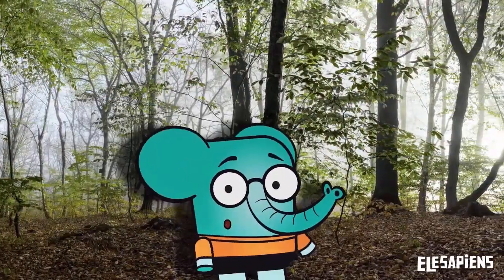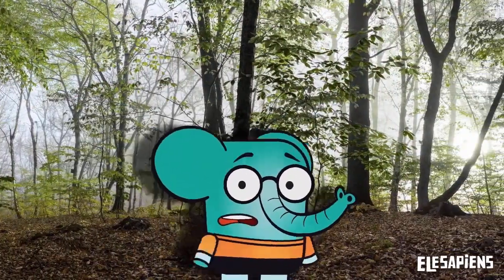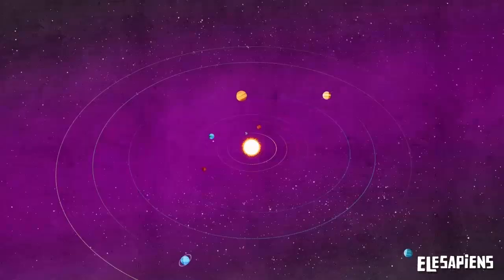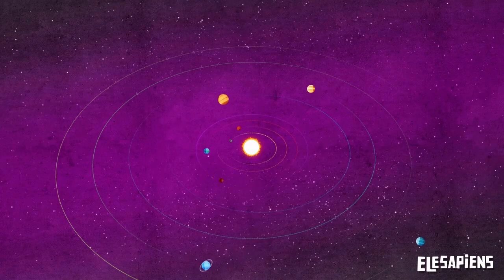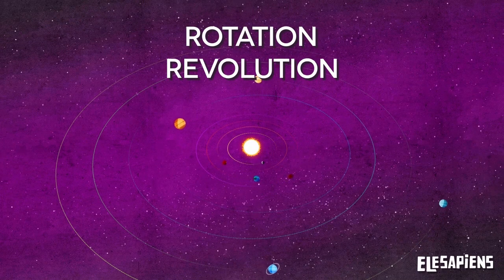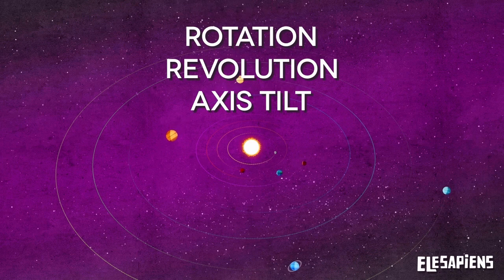But how do these cycles happen? Everything can be explained with three key concepts: rotation, revolution, and axis tilt.